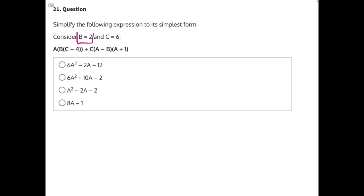Let's start by substituting in our known variables. Rewriting the expression, we have A times B, which is 2, times C, which is 6, minus 4.